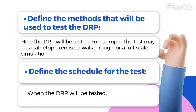Define the methods that will be used to test the DRP — how the DRP will be tested. For example, the test may be a tabletop exercise, a walkthrough, or a full-scale simulation.